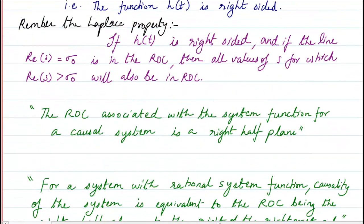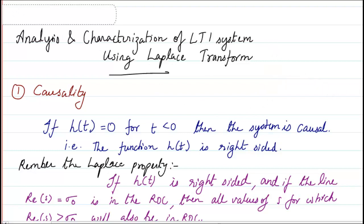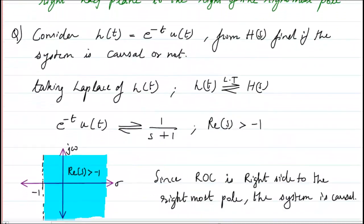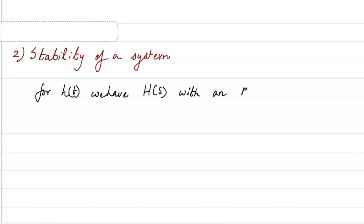That is the concept of characterization of LTI systems using Laplace transform — using only the Laplace transform, without looking at the time-domain function, you can directly conclude if the system is causal or not. Next, we look at the stability of a system. Generally, we can determine stability by looking at the ROC of the Laplace transform of the system.